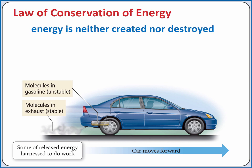According to the law of conservation of energy, we cannot create or destroy energy, only change it from one form to another or transfer it from one object to another. So in an internal combustion engine, the combustion reaction between gasoline and oxygen molecules converts some of the chemical potential energy in the bonds of those molecules into thermal energy, pressure-volume work, and ultimately mechanical, electrical, and kinetic energies to move the car forward. The molecules in the exhaust, for example carbon dioxide and water vapor, have a lower chemical potential energy.